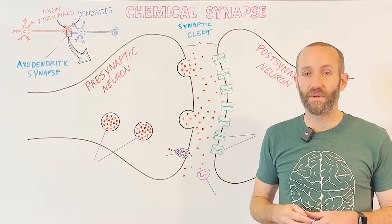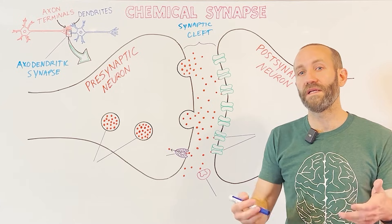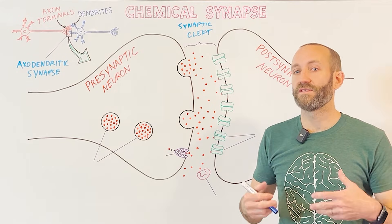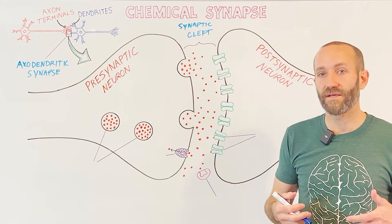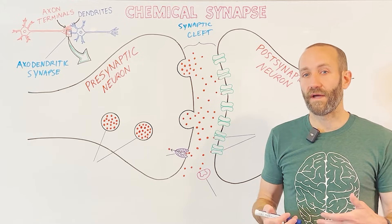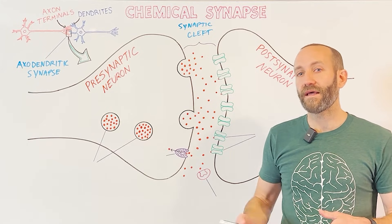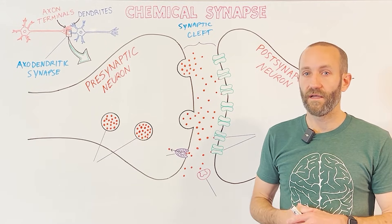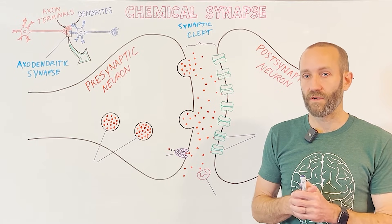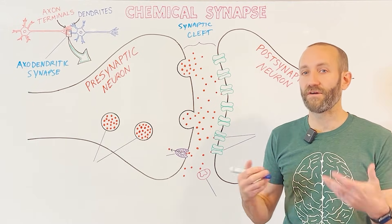A synaptic cleft is a very small space. It's usually somewhere around 20 to 40 nanometers wide. A nanometer is a billionth of a meter, so this size is not something that we can easily conceptualize. But a human hair is about 80,000 to 100,000 nanometers wide, and the head of a pin is about a million nanometers wide. So we're talking about a very small space.